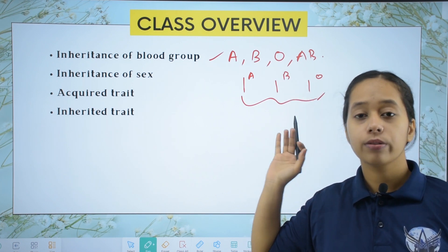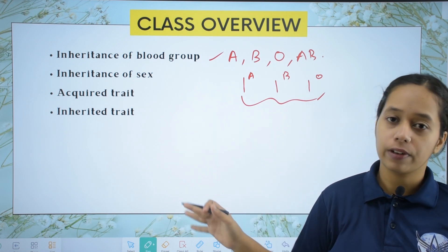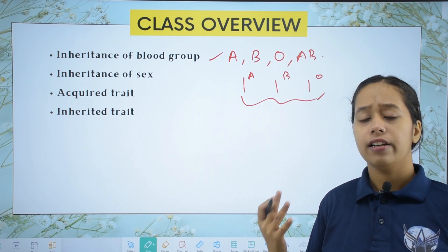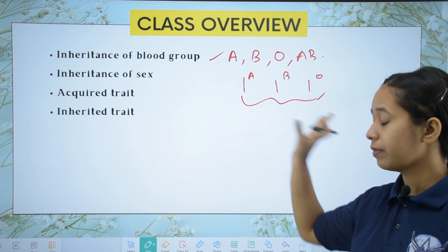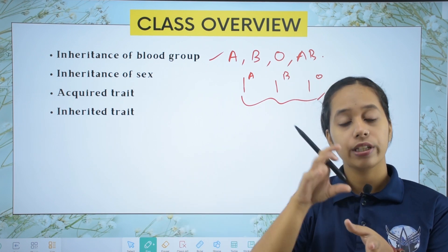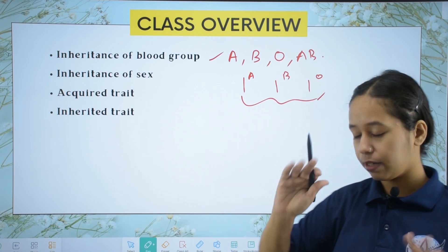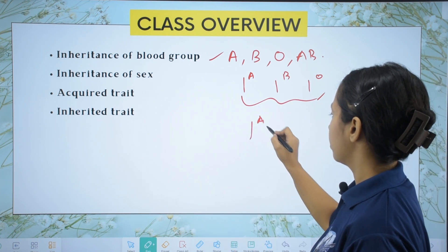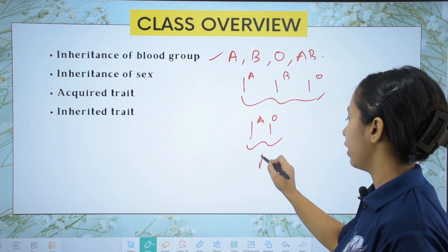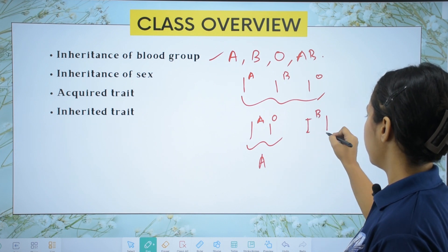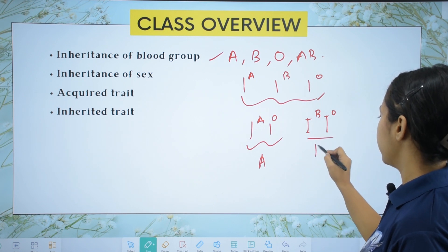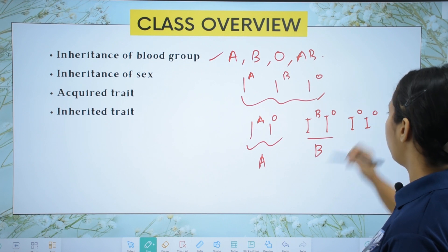A and B are both dominant over O, and O is recessive over both A and B. So if the genes are IA and IO, since A is dominant, the blood group shown will be A. If the genes are IB and IO, since B is dominant, the blood group shown will be B.